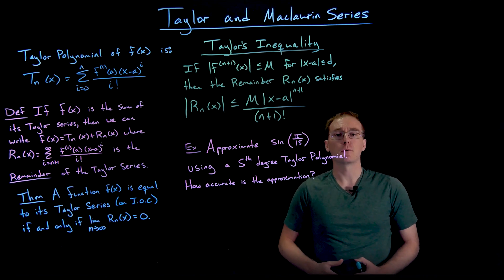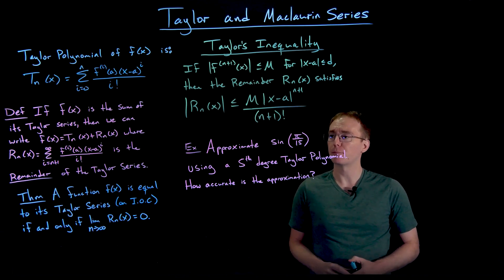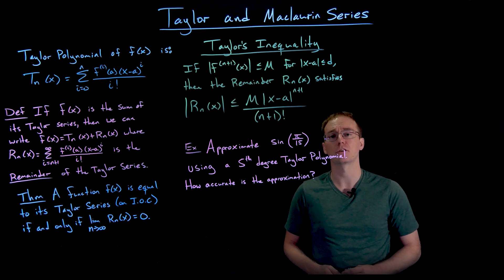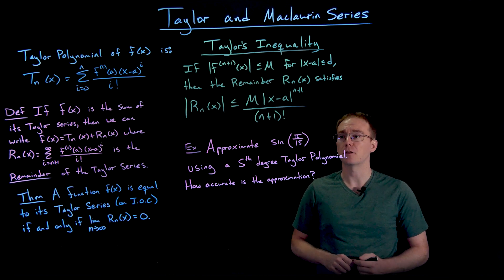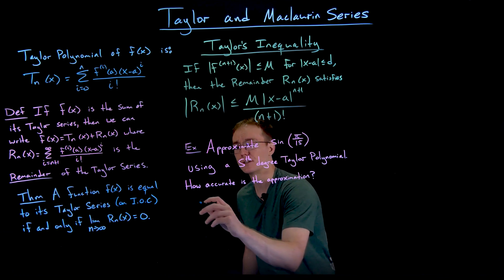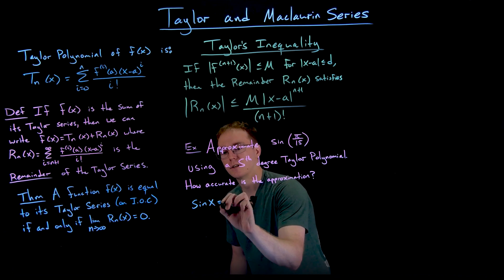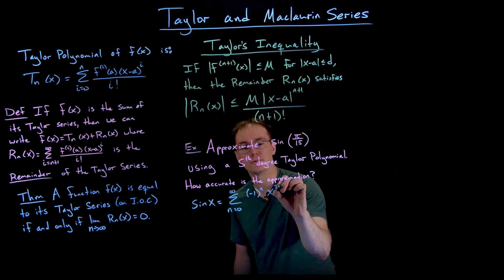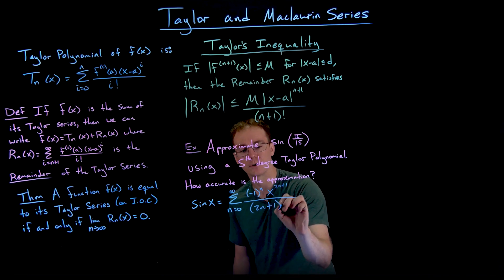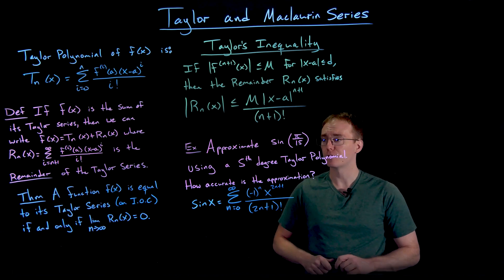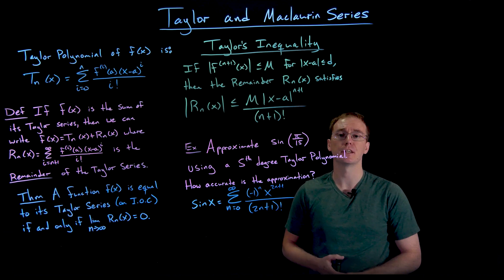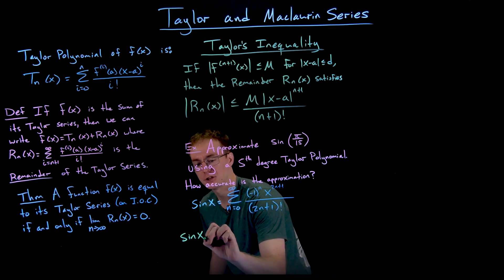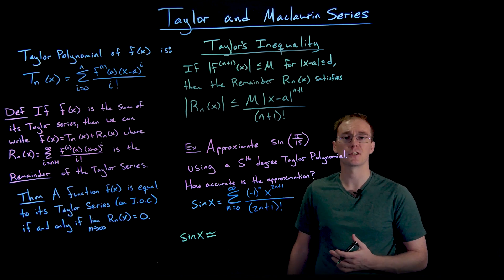Hello everyone, welcome back. Here's another example applying Taylor's inequality: we're going to approximate the value of sin(π/15) using a fifth degree Taylor polynomial, then determine how accurate our approximation is. We'll use the Maclaurin series for sine: sin(x) = the sum from n=0 to infinity of (−1)^n · x^(2n+1) / (2n+1)!. Since we only need up to the fifth power of x, we generate the relevant terms.